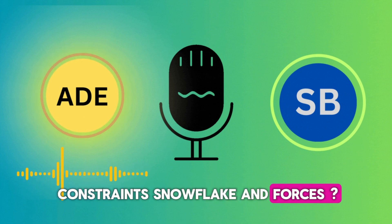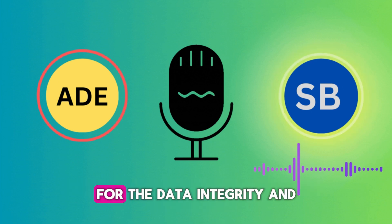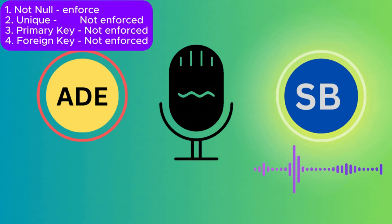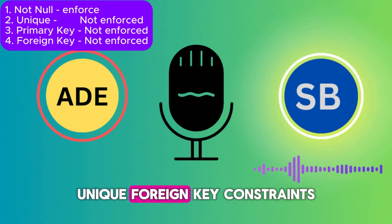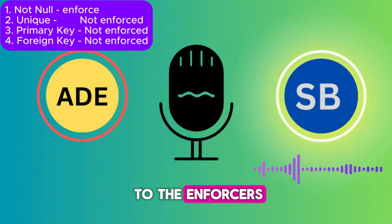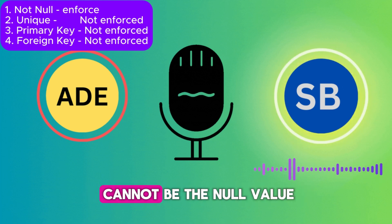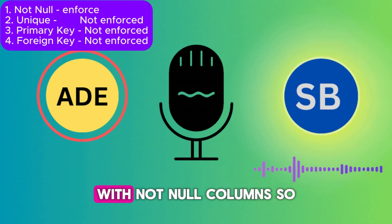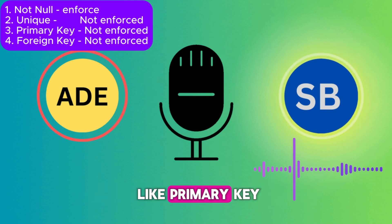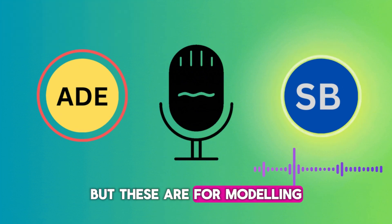Which constraints does Snowflake enforce? Snowflake supports multiple constraints for data integrity and consistency — it supports NOT NULL, PRIMARY KEY, UNIQUE, and FOREIGN KEY constraints. However, Snowflake enforces only the NOT NULL constraint, ensuring that a column cannot have a null value. If you try to update or insert a null value for a non-null column, it will throw an error. For all other constraints like PRIMARY KEY, UNIQUE KEY, and FOREIGN KEY, though they exist, Snowflake does not enforce them — they are for modeling purposes only.